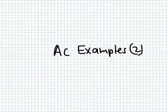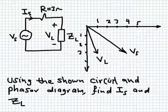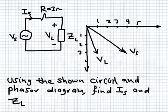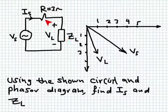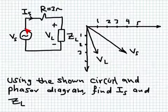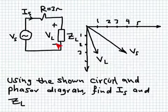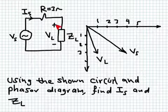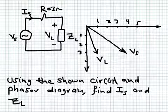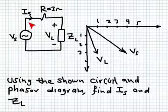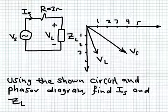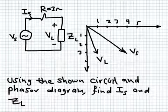Let's start with the first example. We have a resistance R of 3 ohms in series with an unknown impedance ZL. We're also given a phasor diagram showing the phasor of the source voltage VS and the voltage across ZL, called VL. Using the circuit and the phasor diagram, we'd like to find IS (the circuit current) and ZL — its value and whether it's capacitive or inductive.